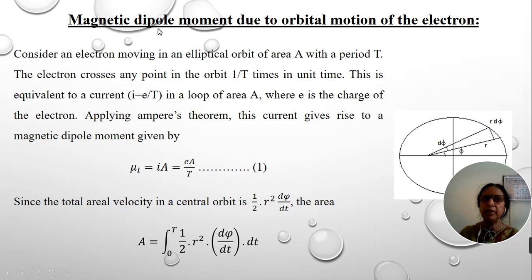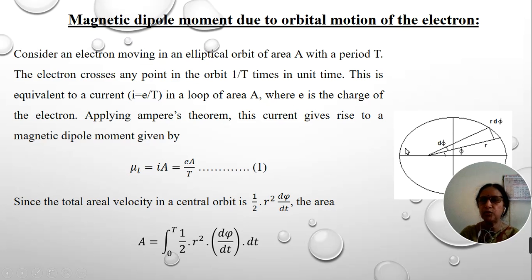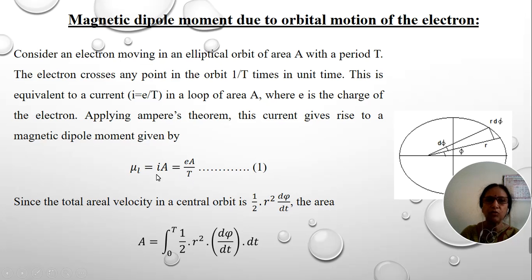We also have a magnetic dipole moment due to spin motion, but we are not deriving that in this video — just the derivation due to orbital motion. The moving electron constitutes an electric current I. According to Ampere's theorem, we can write the expression for magnetic moment as the product of current and the area swept by the electron during its path. The current value can be written as e divided by T, where T is the period of oscillation of the electron, in accordance with the definition I equals Q divided by T. This is equation number one.